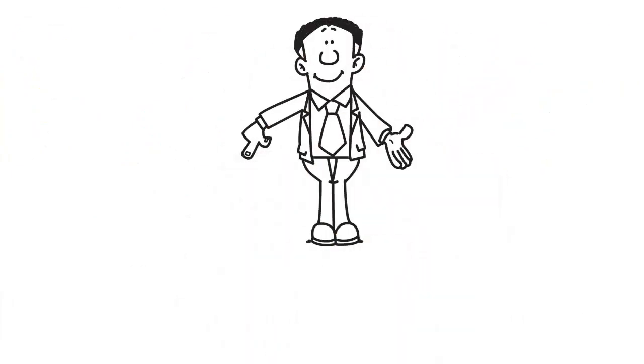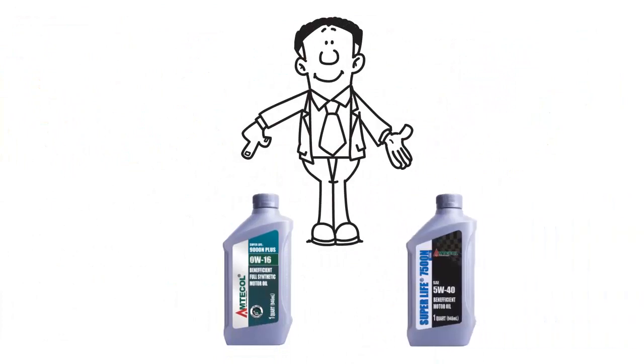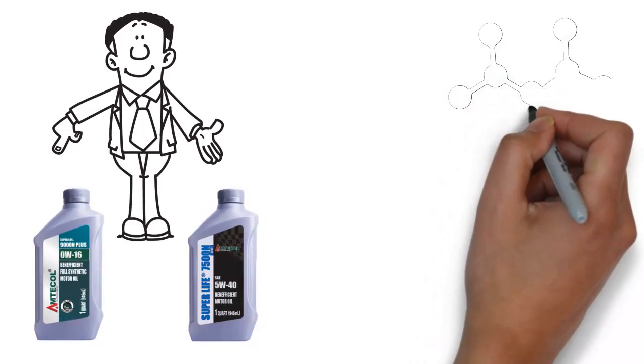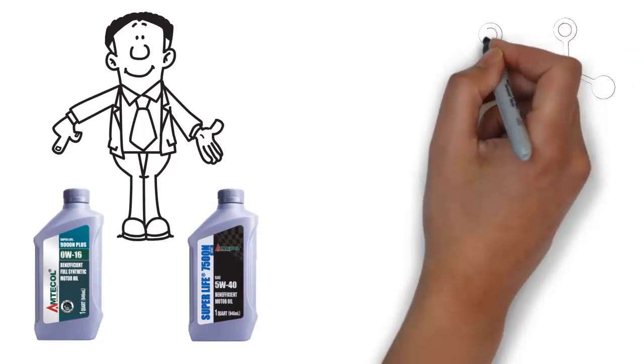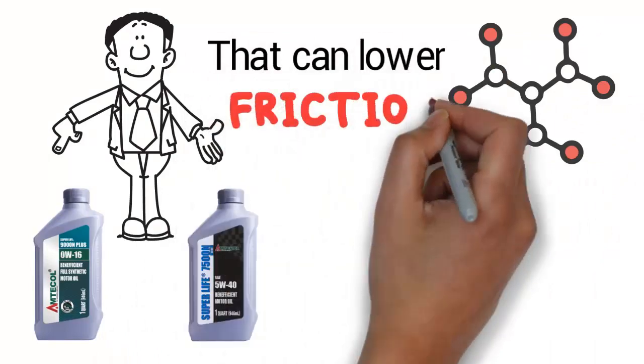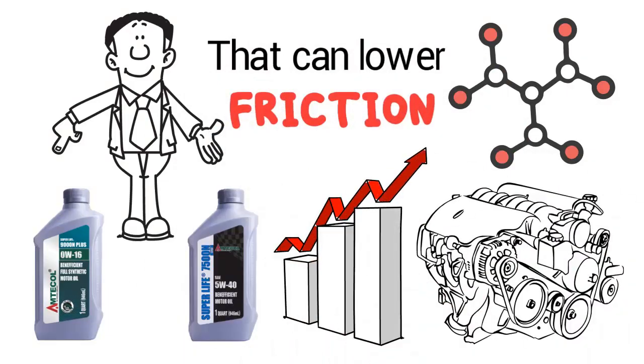The primary difference between synthetic oil and conventional oil is at the level of refinement. Refinement processes and ingredients also result in scientific control over molecular size and purity, which can lower friction, reduce engine sludge, and increase performance.